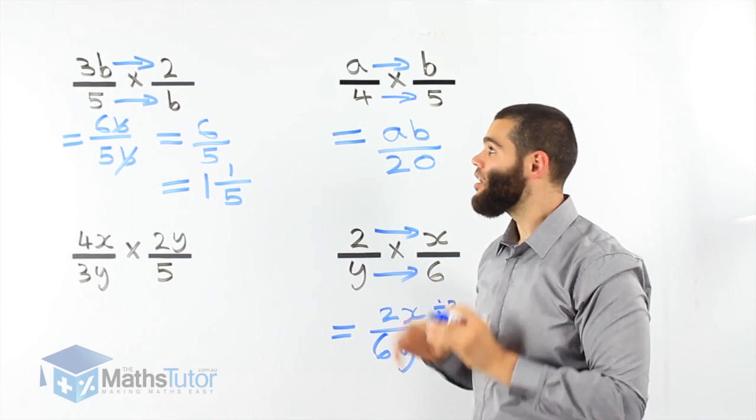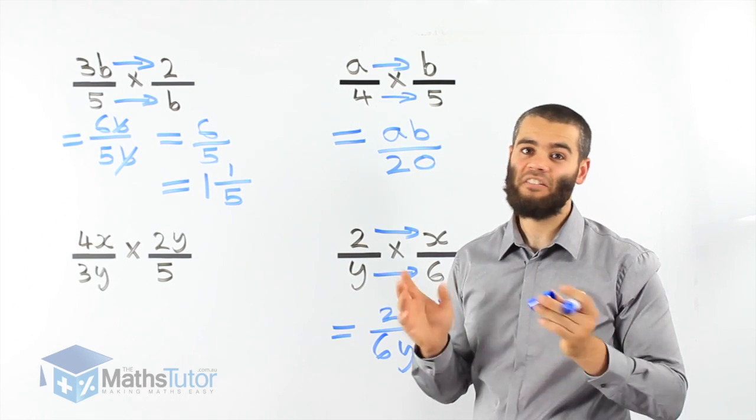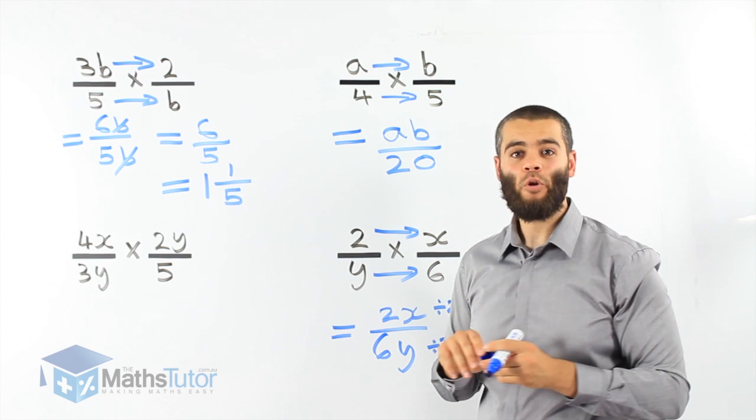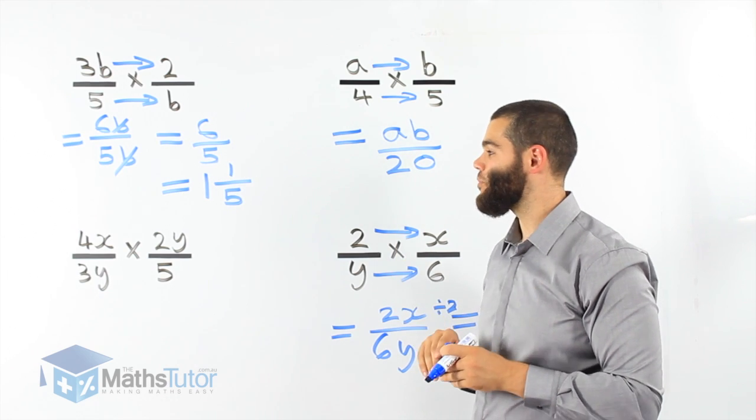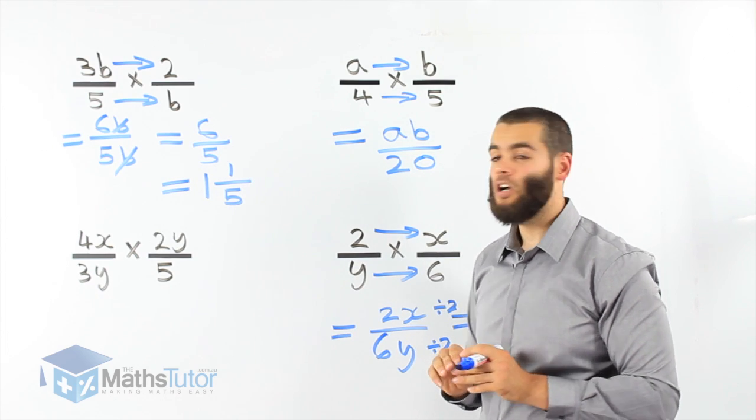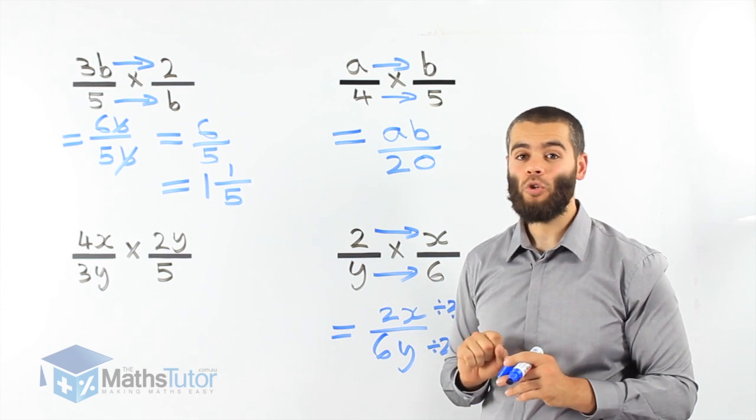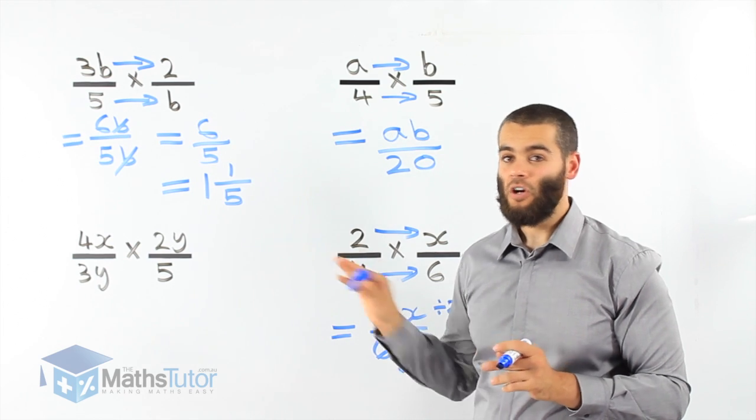Again, what do you notice? We just always follow the rules of normal fractions. Exactly the same, but we have pronumerals as well. So this is called algebraic fractions. Last one. 4x over 3y. Come on. You can do this. Times 2y over 5. Try to do it with me.